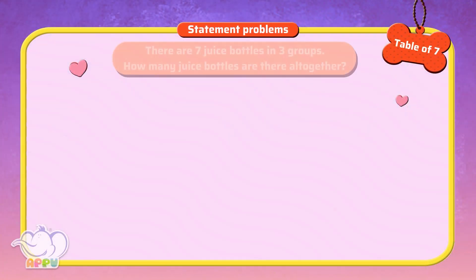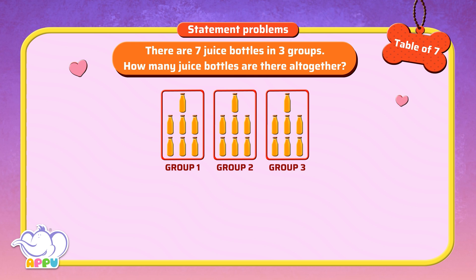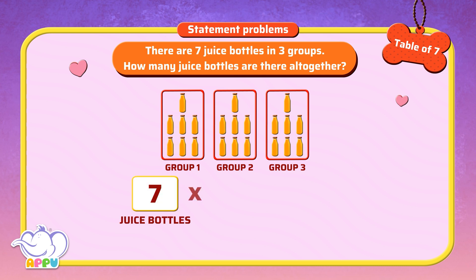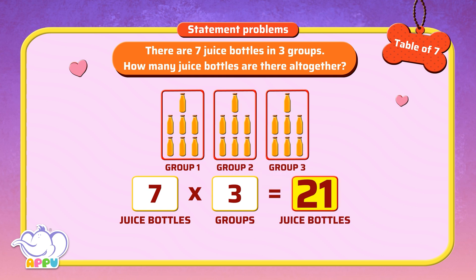Statement Problems. There are 7 juice bottles in 3 groups. How many juice bottles are there all together? To find the total number of juice bottles, we multiply. 7 juice bottles multiplied by 3 groups is equal to 21 juice bottles. There are 21 juice bottles in all.